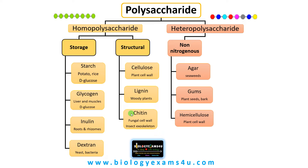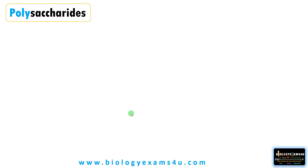Do you know the most abundant organic molecule on earth is a polysaccharide — cellulose — that is present in plants? In this video, let us understand polysaccharides: their structure, classification, and function within 5 to 10 minutes. Let's begin with the term polysaccharides. Poly means many, whereas saccharides means sugar or sugar units.